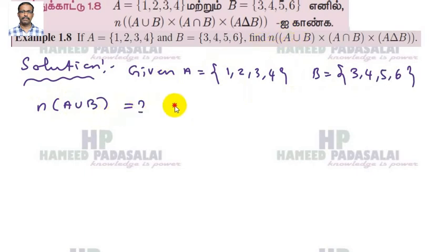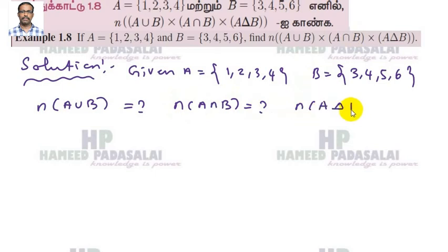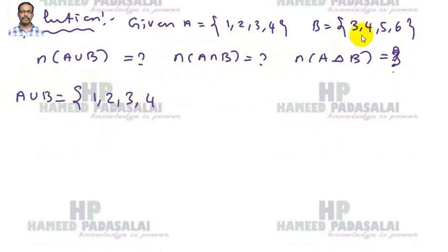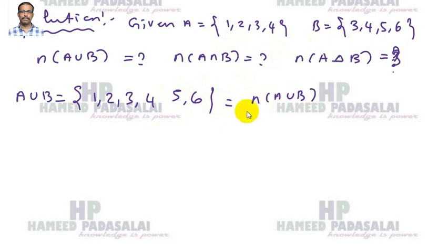Number of A union B. A union B is going to be {1,2,3,4} union {3,4,5,6}, so we write {1,2,3,4,5,6}. The number of elements of A union B — how much? 1,2,3,4,5,6 — so the number of A union B is 6.